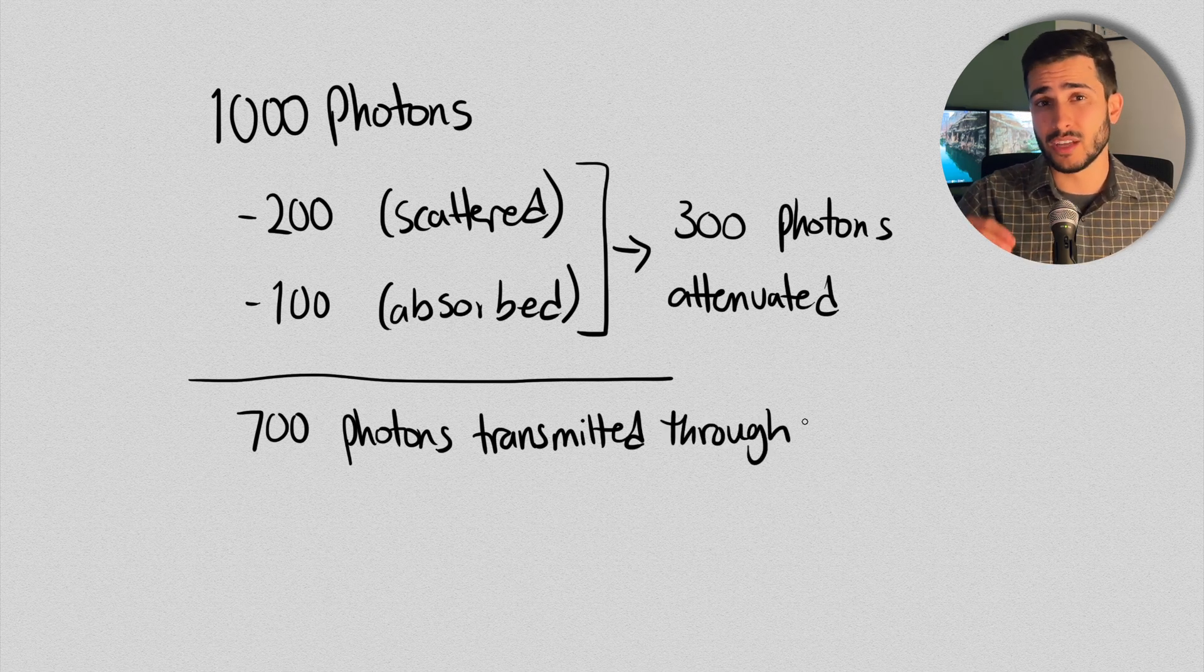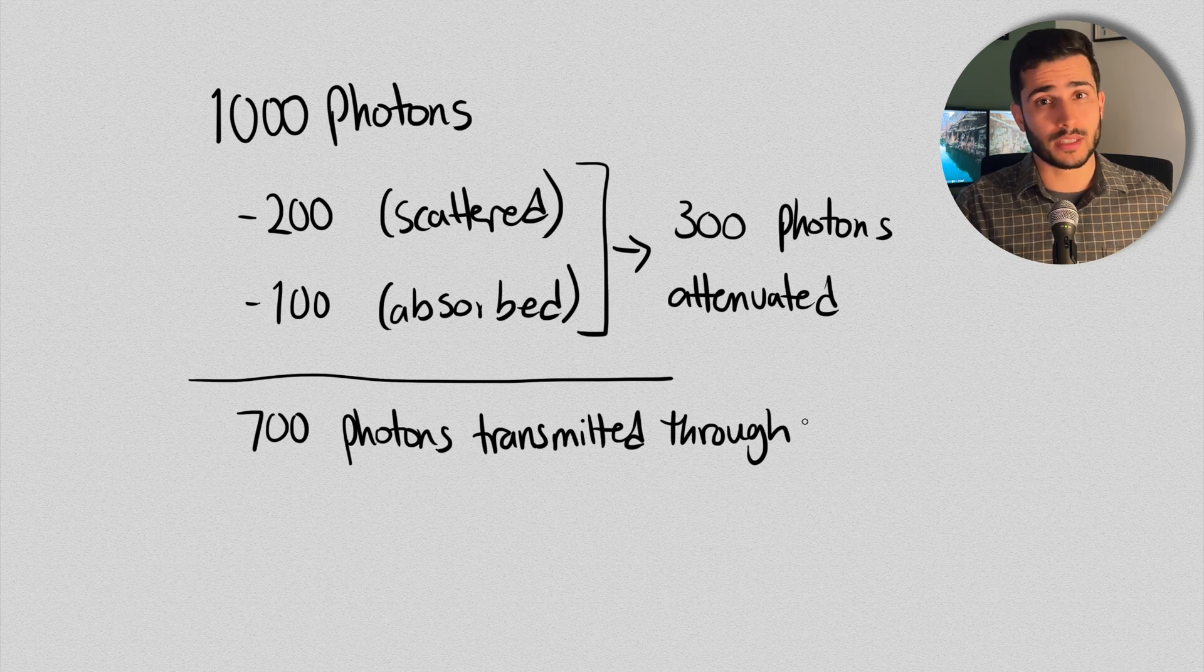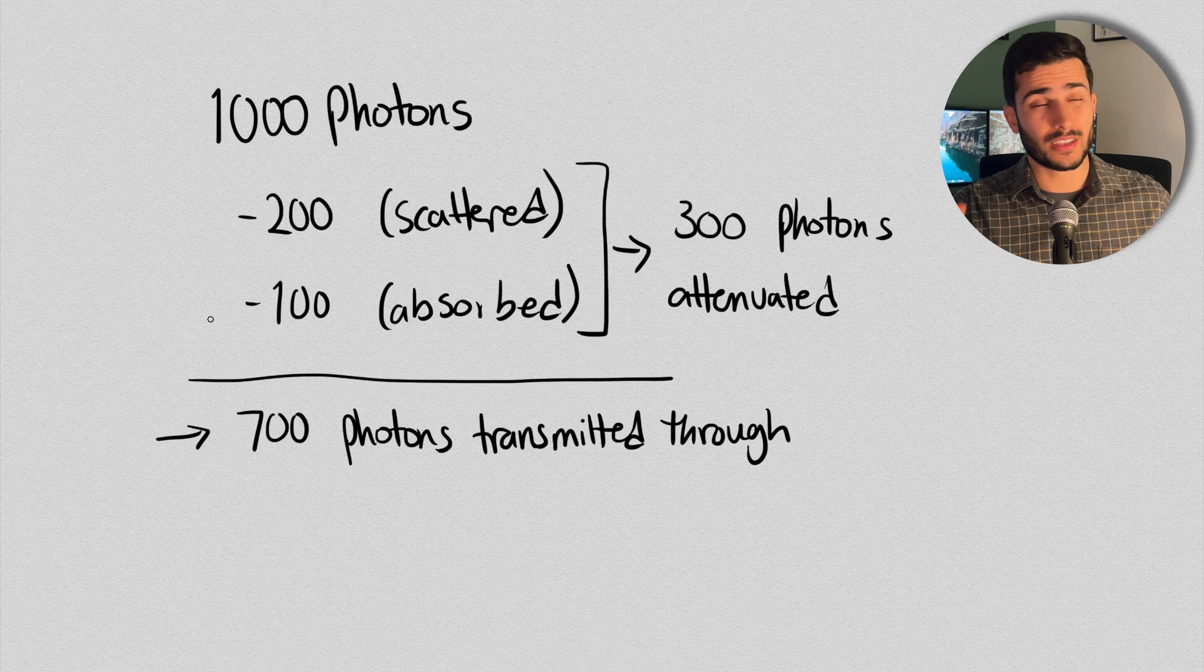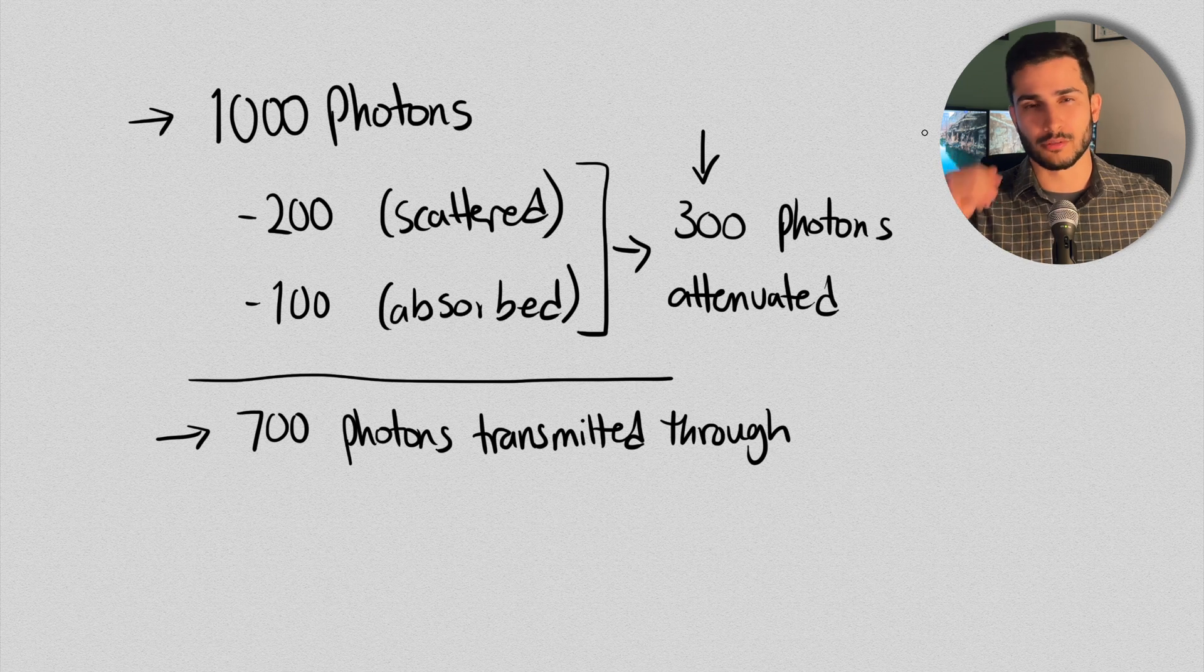So therefore, we can say that the number of photons that are attenuated in a medium really depends on the number that traverse and go through the medium. And that logically makes sense. If we know that 700 went through, and we know that the original beam had a thousand photons, then obviously 300 were attenuated.